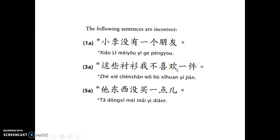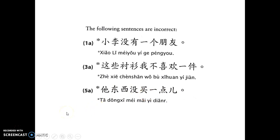这些衬衫我不喜欢一件 is incorrect. 不喜欢 is the verb — it has to be in the back. So the correct way to say it is 这些衬衫我一件也不喜欢. Similarly, 他东西没买一里儿 is wrong — 没买 is the verb, it has to go in the back. The correct form is 他东西一点也没买. Those are the most common mistakes people make.